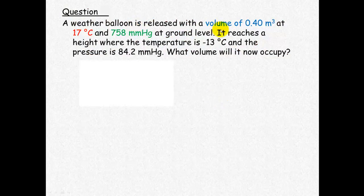Okay, so our important bits of information here is that volume is 0.40 metres cubed. Now you can change that volume if you want to. Remember that a metre cubed equals 1,000 litres. But there's no need to because we can just work out the volume in metres cubed. T1 we must convert to Kelvin. So 17 degrees Celsius is 290 Kelvin. And P1 is 758 millimetres mercury.